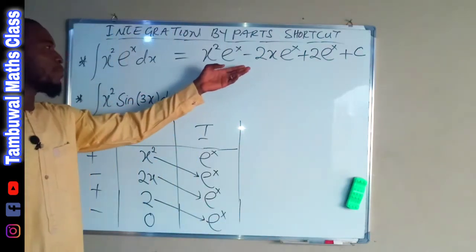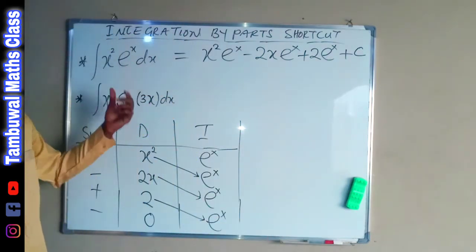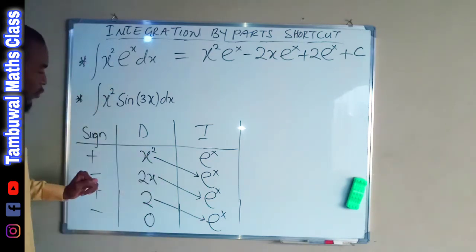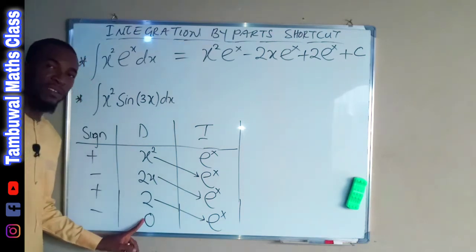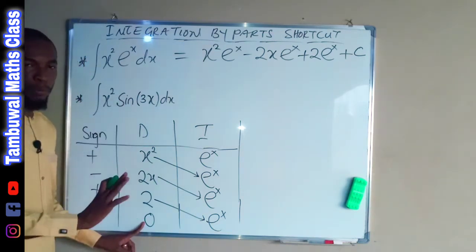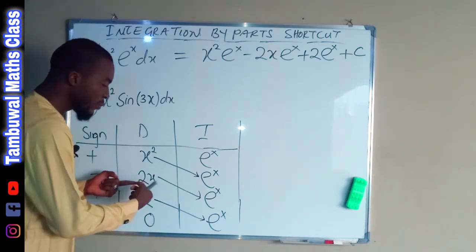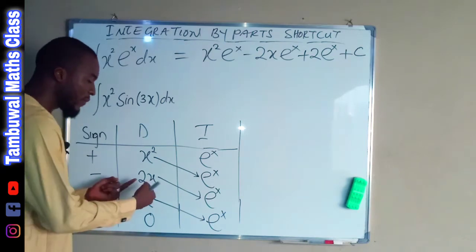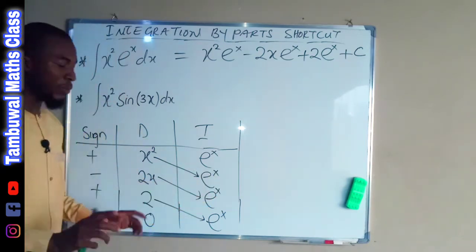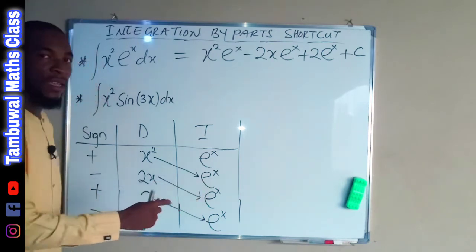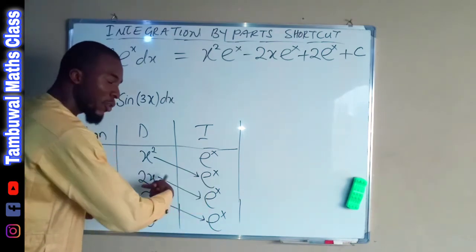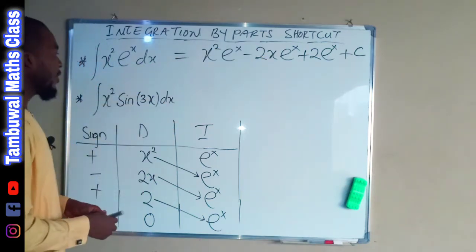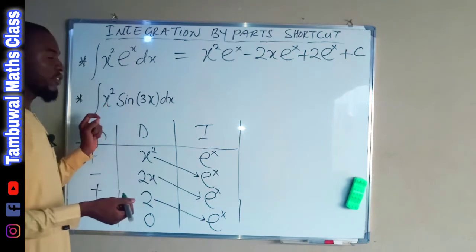There are three things you need to know before performing this method. First, once you reach zero while differentiating your function, you stop. Second, once the product of your row can be integrated directly, you stop. Third, once you have equal functions on the same row, you stop — for example if you have 2x in the differentiation column and 2x appearing, you stop, take the product of that row, and finally take its integral.